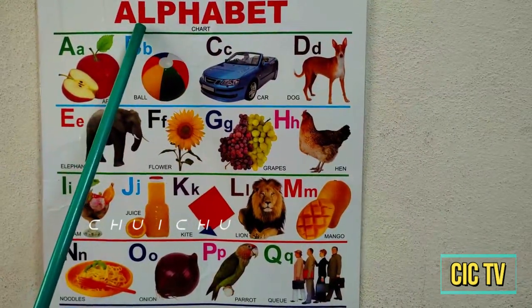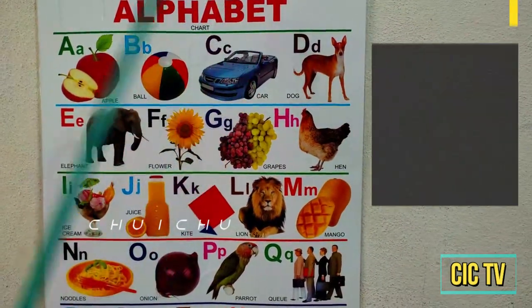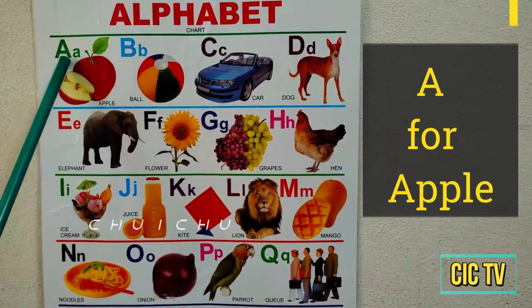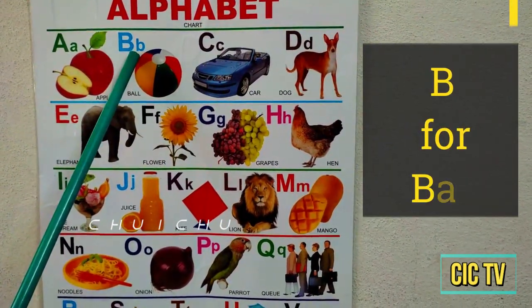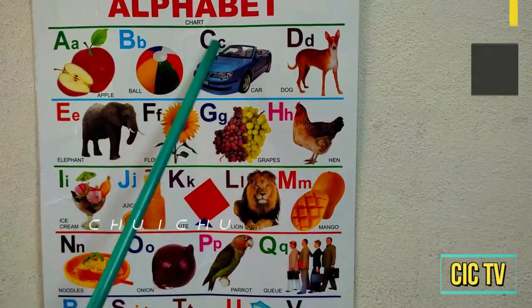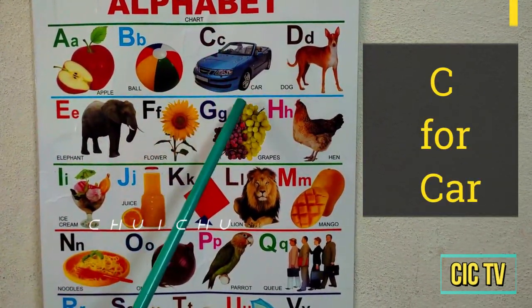Now, we are going to learn English alphabets. A for apple, B for ball, C for car.